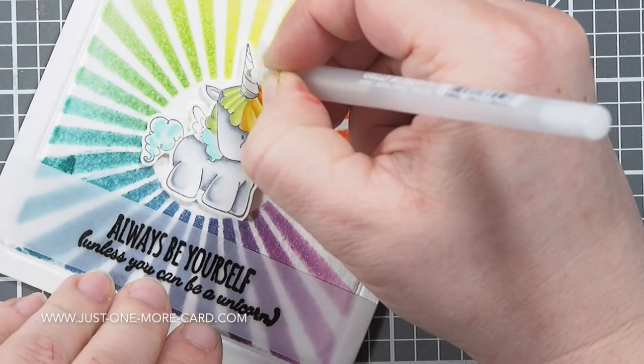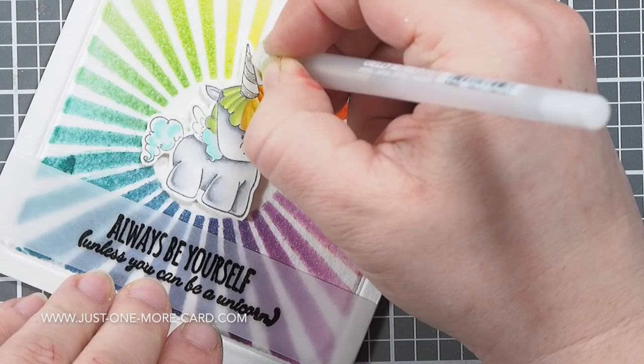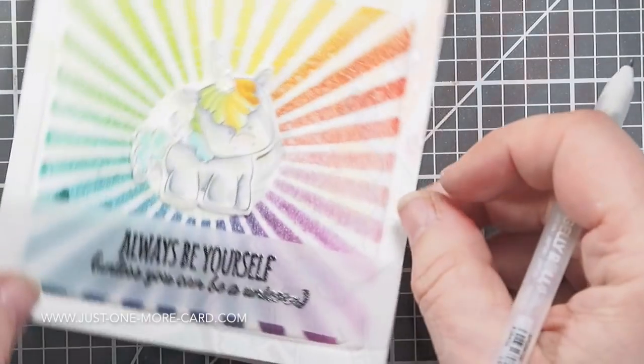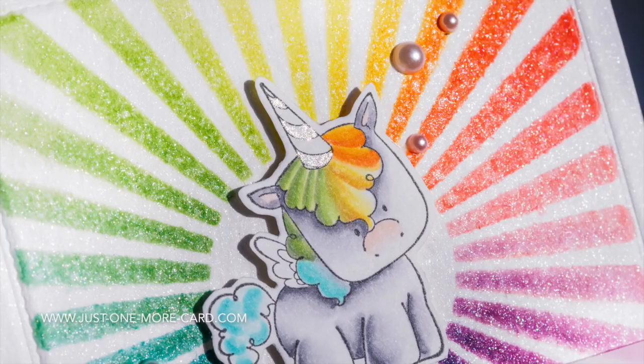And then I used my most prized possession, the jelly roll stardust pen, which I could not live without, to color in a little bit of the unicorn horn.